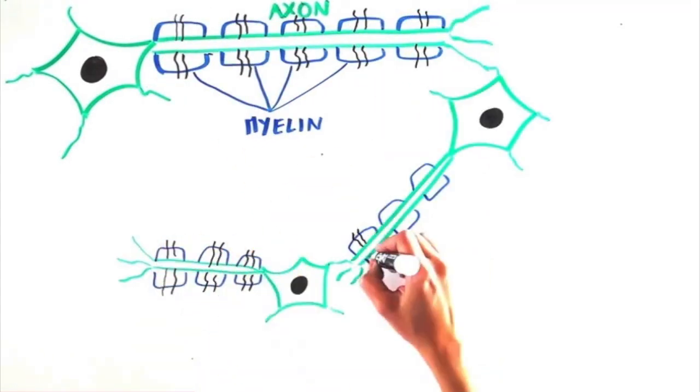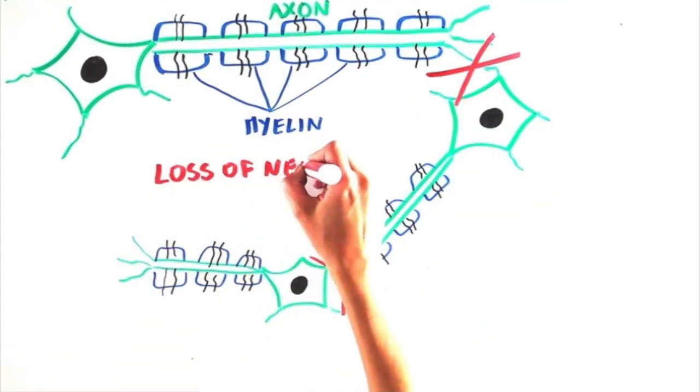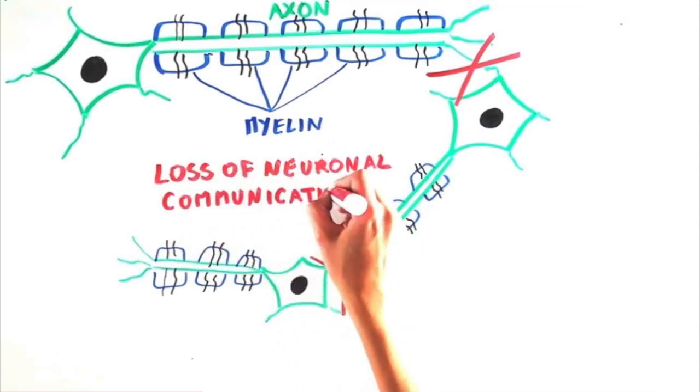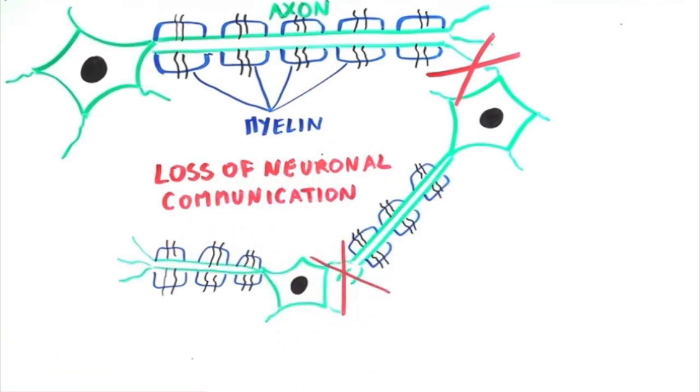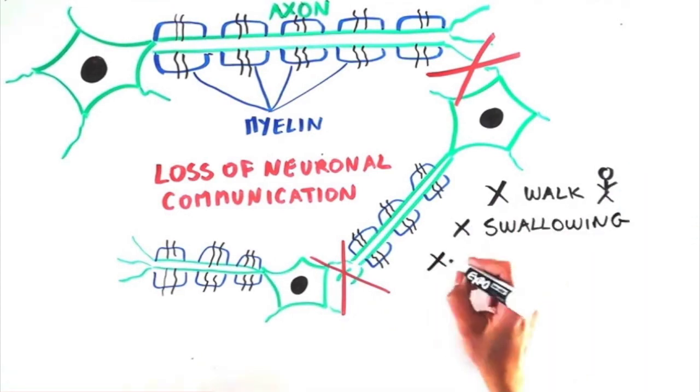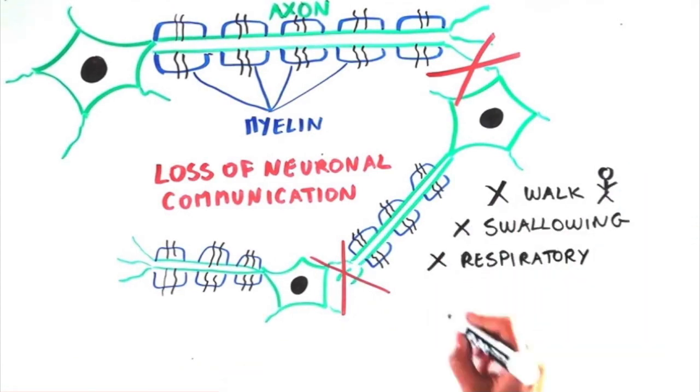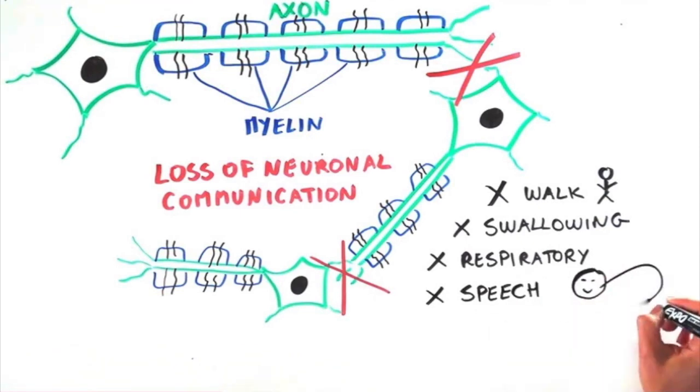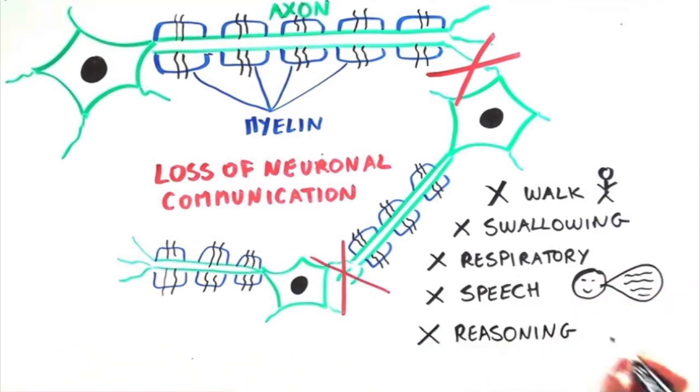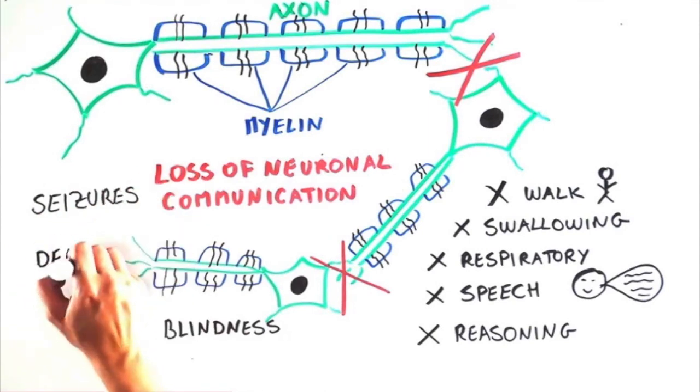When neurons can no longer properly communicate with each other, there is a loss in motor and cognitive skills, resulting in a variety of symptoms that MLD patients experience, like inability to walk, loss of swallowing, respiratory problems, loss of speech and communication, reasoning, sometimes blindness, seizures, and unfortunately, eventually death.